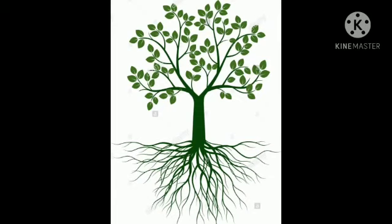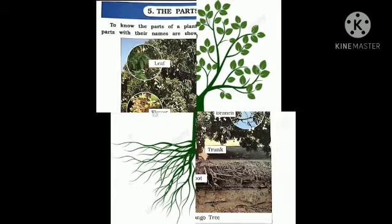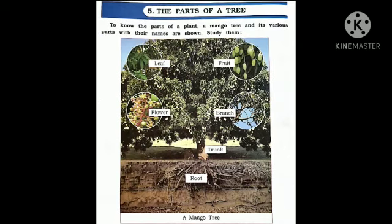We have all the parts of the tree, which are 6: leaf, flower, fruit, branch, trunk, and root — which you can draw all line by line.